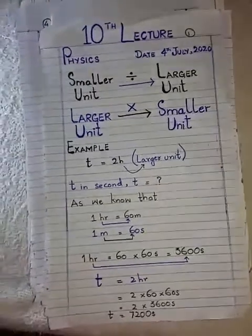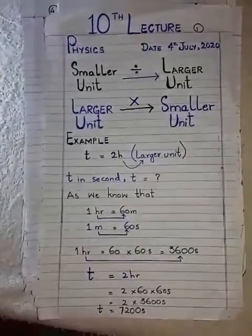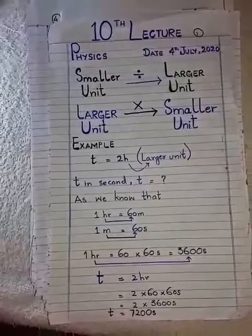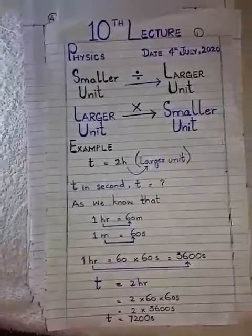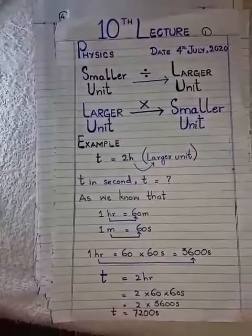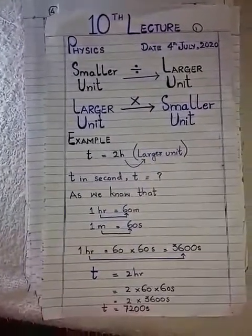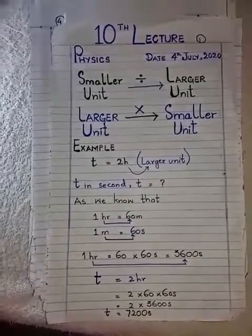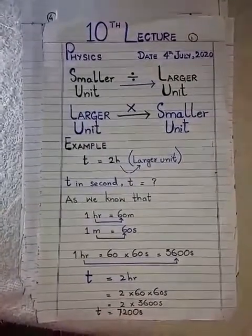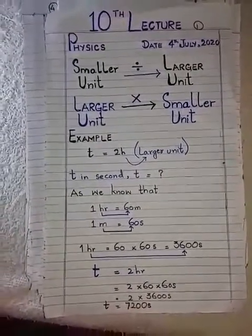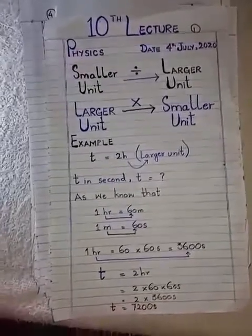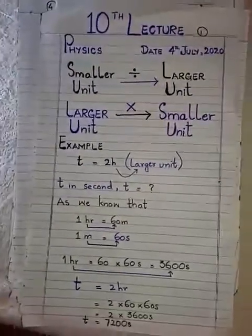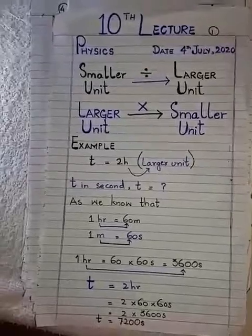Good morning to all the students of class 8. Today we are going to cover examples and assignments of chapter number one: Physical Quantities and Measurement. Before starting the examples and assignments, I will tell you about the conversion of units. As I told you, there are different types of units used for different types of physical quantities.